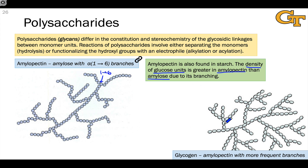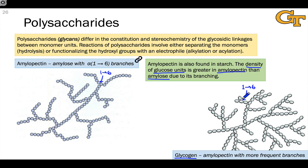Amylopectin is found in plant starch, but there's an animal equivalent: glycogen. Glycogen is similar to amylopectin but contains more frequent branches, packing even more energy density into the same volume. Just as in amylopectin, these branches are alpha 1,6 glycosidic linkages. So at branch points, you have a sugar with monosaccharide units connected at both carbons 4 and 6.